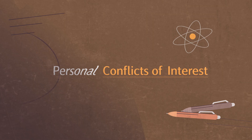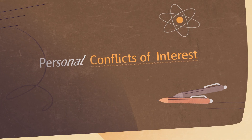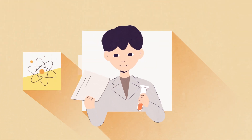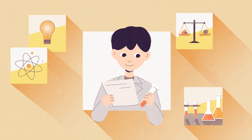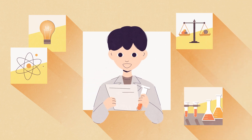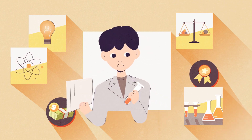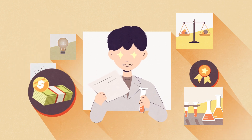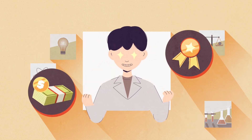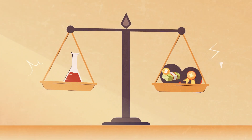Personal Conflicts of Interest. As a researcher, in the production of knowledge, the integrity of research must always be the researcher's primary interest. Profit, fame, and more must always be secondary interests. Researchers should never allow secondary interests to influence the team or the quality and outcome of research.